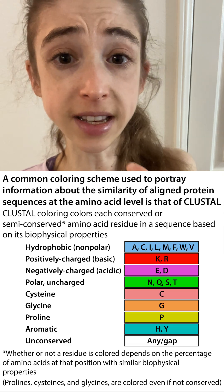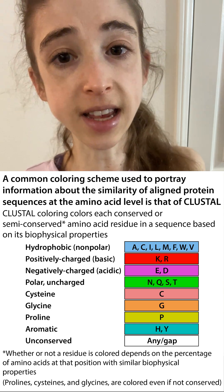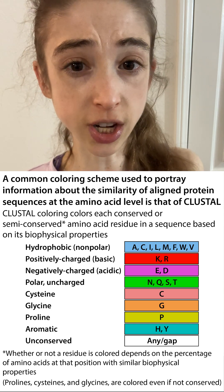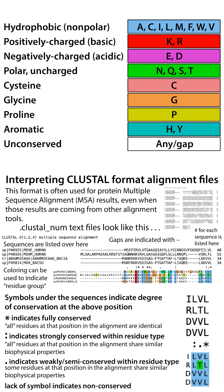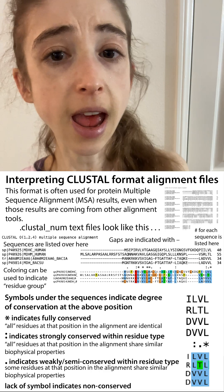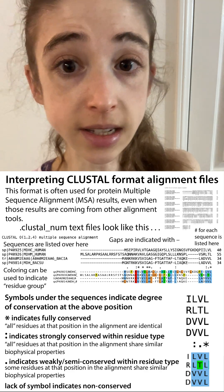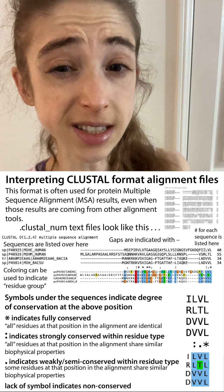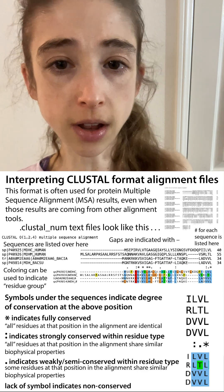The bottom line is that coloring indicates biophysical properties, and if things are colored it indicates some degree of conservation at that position. For glycine, proline, and cysteine specifically, you want to check how conserved they are — if they're all the same color they're at least in the same class. For example, valine and leucine are both nonpolar, so they'd share a color and get a colon. If they were all valine, you'd get an asterisk. If a threonine sneaks in — which is polar — you might only get a colon if the rest were nonpolar. No symbol means the position is nonconserved. That's the basics of the coloring and the symbols under the sequences, which indicate the degree of conservation based on biophysical properties.